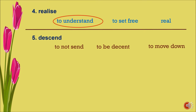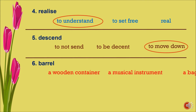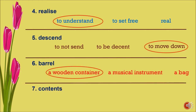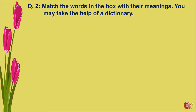Number six: barrel — options are a wooden container, a musical instrument, and a bag. The correct meaning is a wooden container. Number seven: contents — options are to be happy, the ingredients, and the index of a book. The correct option is the ingredients. Then question number two: match the words in the box with their meanings; you may take the help of a dictionary.